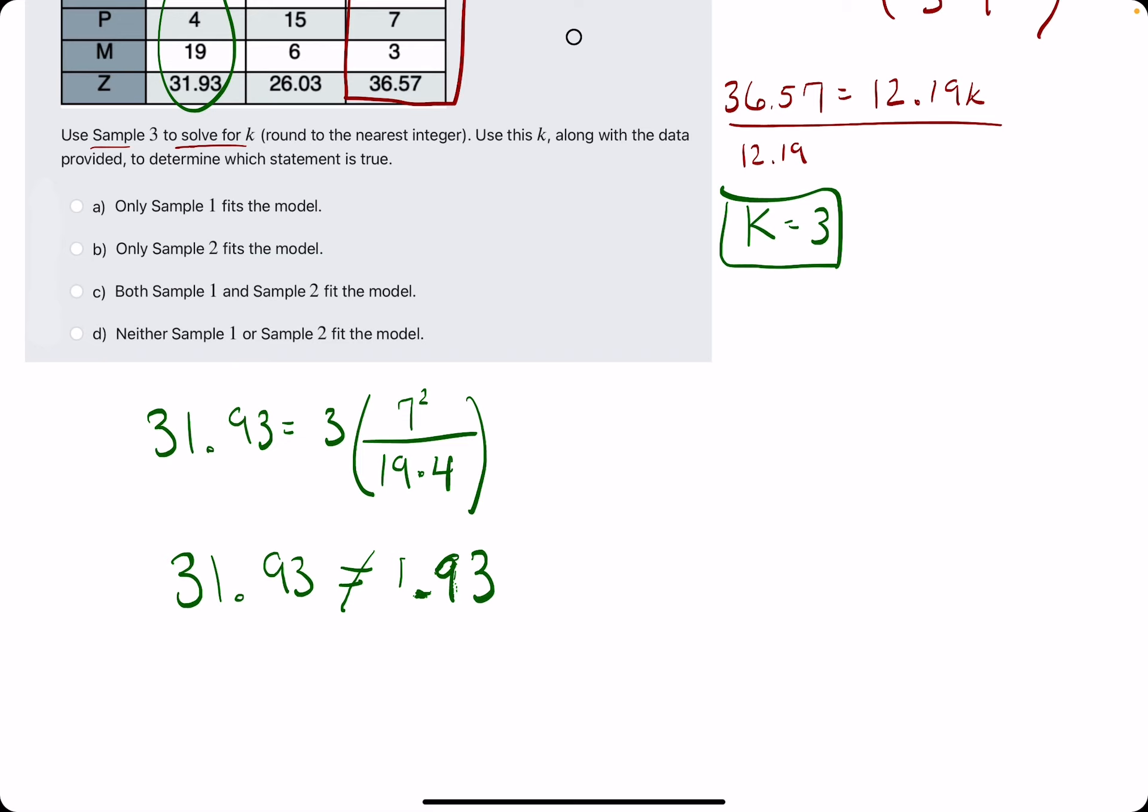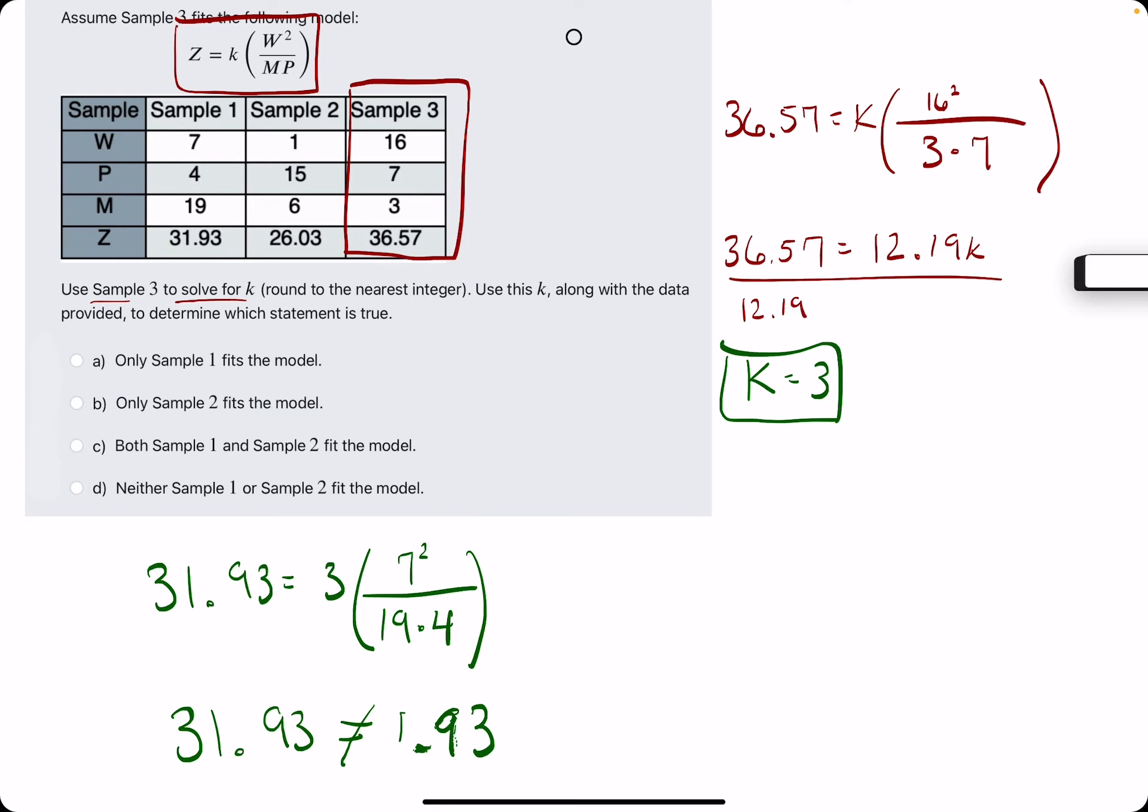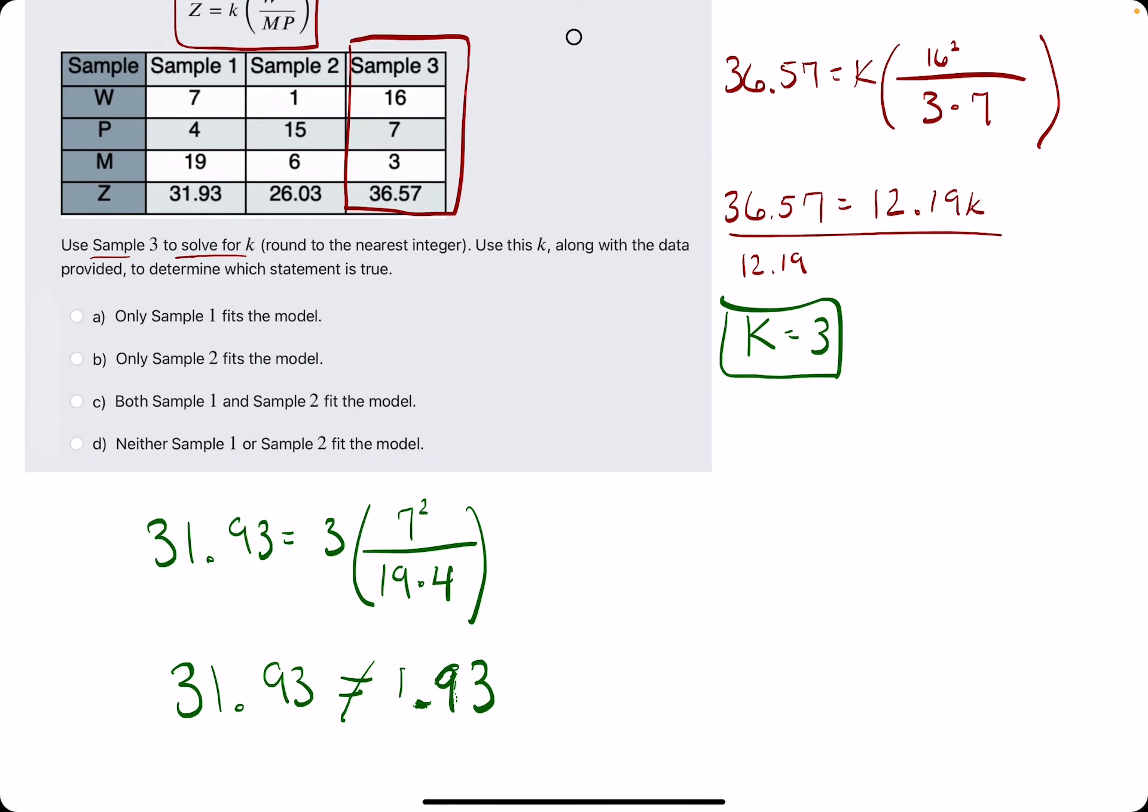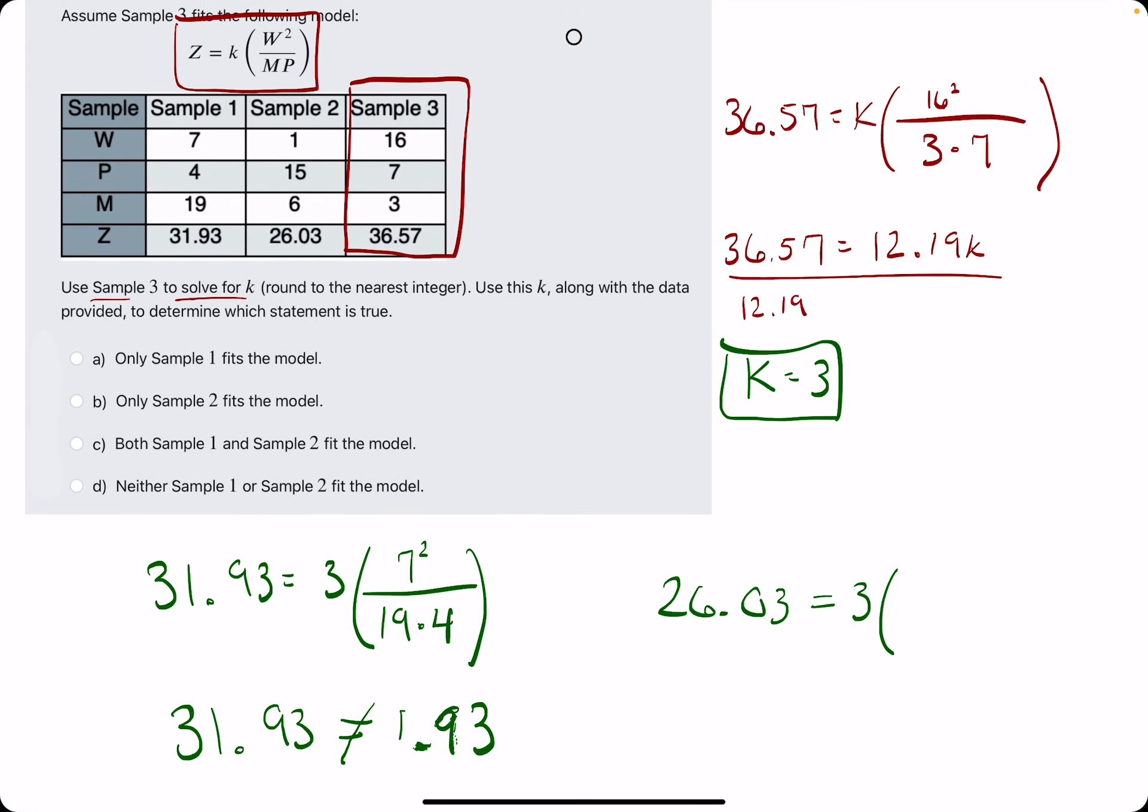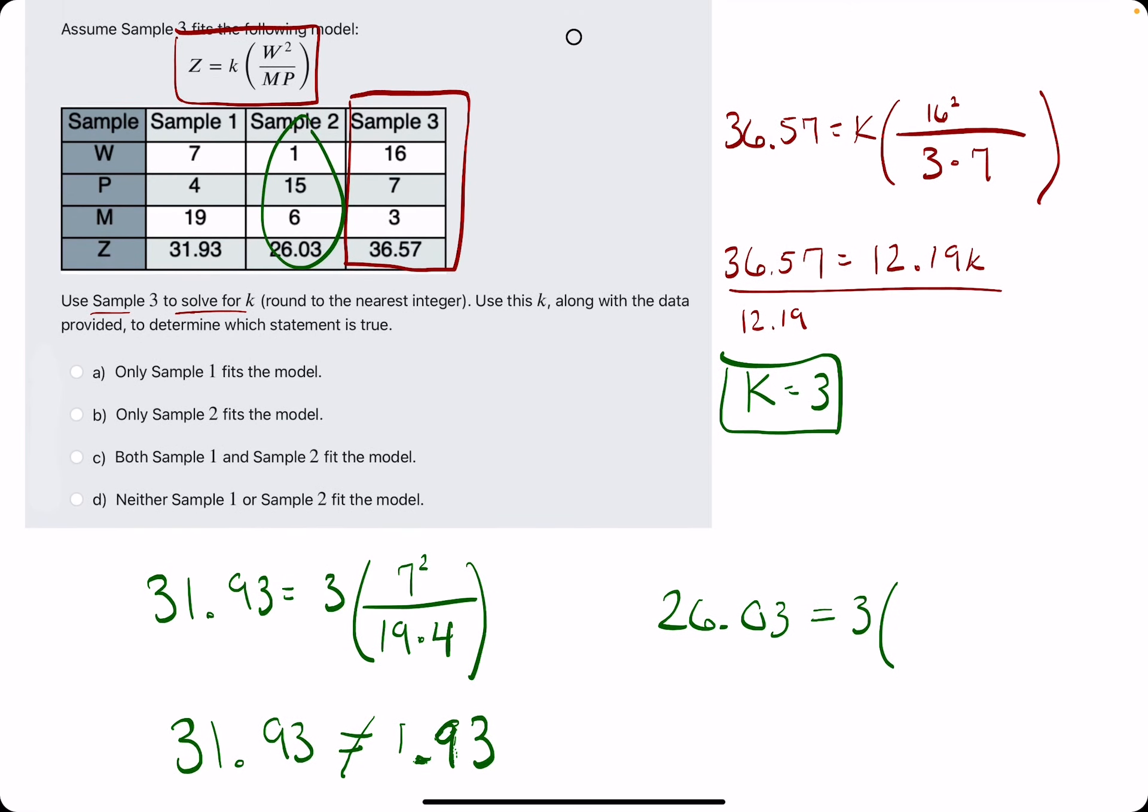So Sample 1 is off the table. So we need to check Sample 2, and then we'll be done. So Sample 2 starts with a z value of 26.03. And our k value is still 3. W from Sample 2 is 1, so we have 1 squared over M times P, which would be 6 times 15.